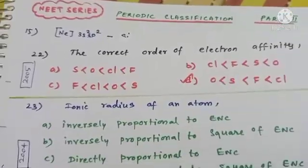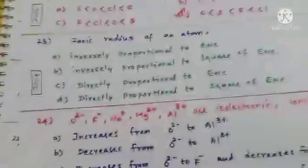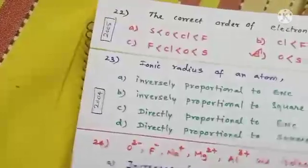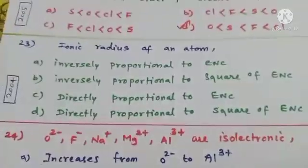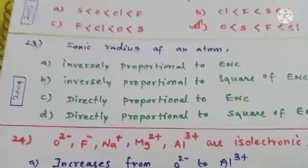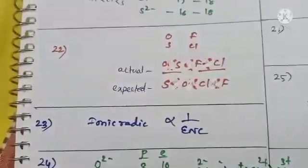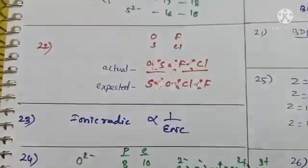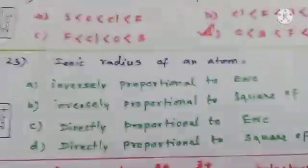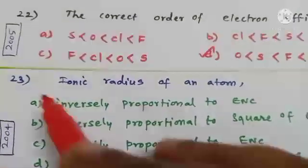Question 23: ionic radius of an atom is — (A) inversely proportional to effective nuclear charge, (B) inversely proportional to the square of effective nuclear charge, (C) directly proportional to effective nuclear charge, or (D) directly proportional to the square of effective nuclear charge. As studied under ionic radius calculation using Pauling's method, ionic radius is inversely proportional to effective nuclear charge. Option A is the correct answer.